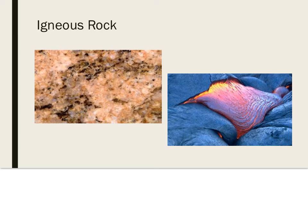A little more about igneous rock: it forms when magma and lava cool and make mineral crystals. Igneous rock is typically hard and is often glossy and shiny. There are two basic types classified by how they form: intrusive and extrusive. Intrusive igneous rock forms underground; extrusive igneous rock forms above ground and cools quickly.